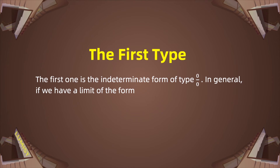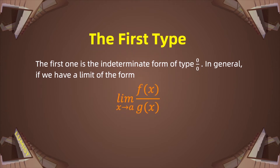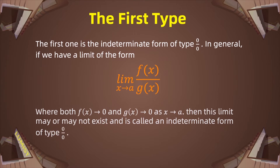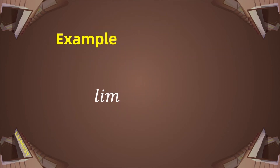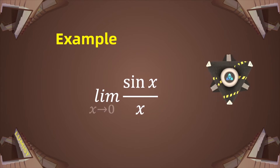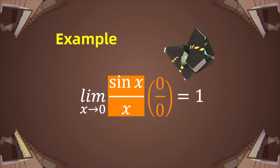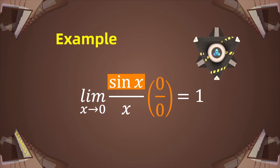The first type is the indeterminate form of zero over zero. In general, we have a limit of the form limit of f(x) over g(x) as x approaches a, where both f(x) approaches zero and g(x) approaches zero as x approaches a. Then this limit may or may not exist, and it is called the indeterminate form of type zero over zero. For example, consider the limit of sin(x) over x as x approaches zero, which equals one. This is in the indeterminate form of zero over zero, since sin(x) approaches zero as x approaches zero.